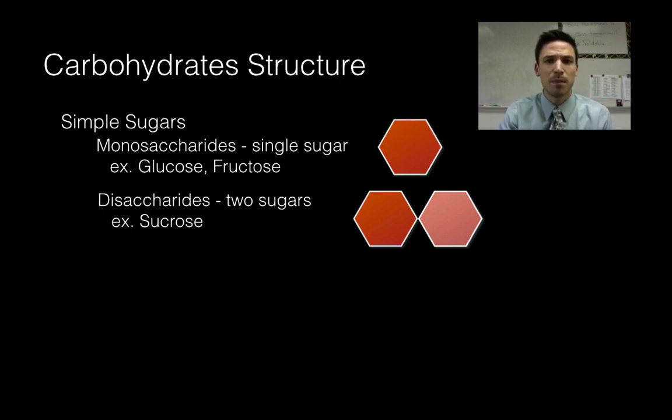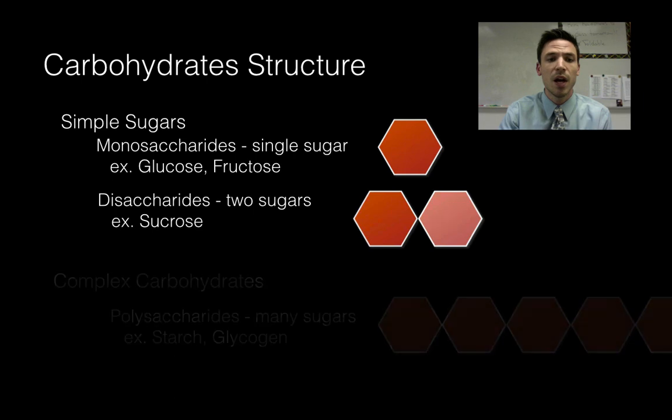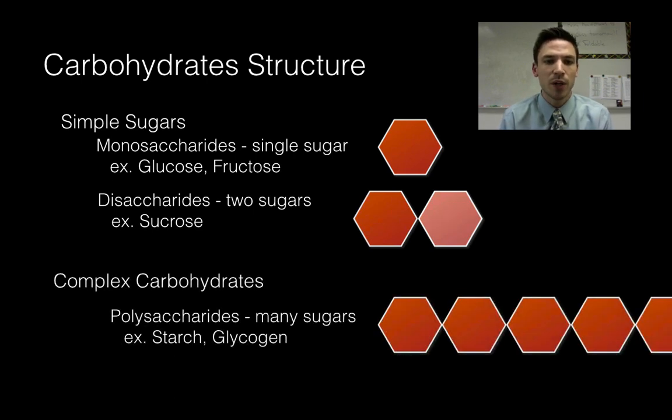What happens though if I start making bigger chains, so I take hundreds if not thousands of these monosaccharides, these glucose molecules and string them together, I'm going to form a complex carbohydrate, something that's called polysaccharides, poly meaning many sugars. So an example of that would be starch, what we find in things like potatoes or glycogen.